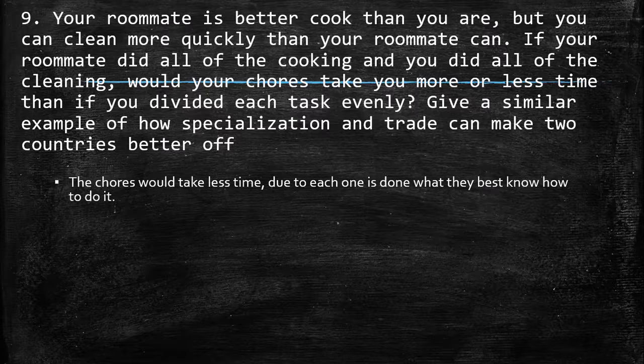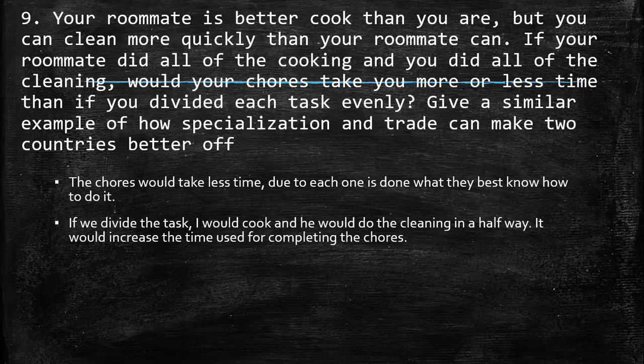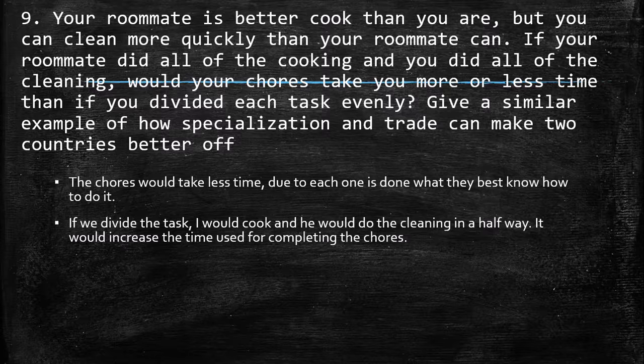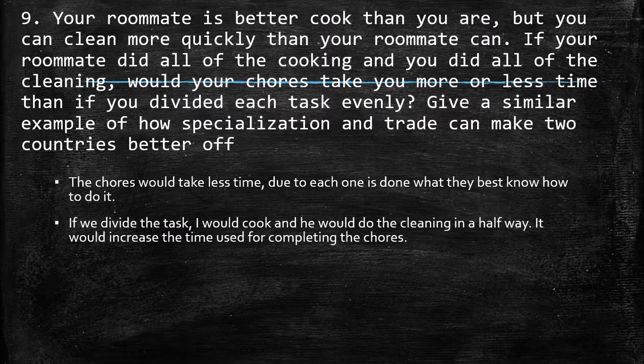In this case, the roommate is going to cook, which he is better at than me, and I can do the cleaning because I'm better than him. So it would be a saving of time. What if we divide the task? In that case, I would cook and he would do the cleaning, but maybe only halfway. So it would increase the time used for completing the chores, because I'm going to do something that my roommate can do much faster than me, and on the other hand, he's going to spend more time doing the cleaning.